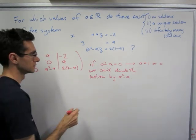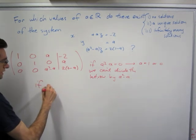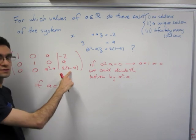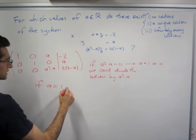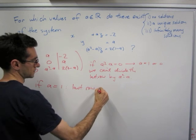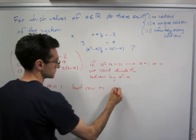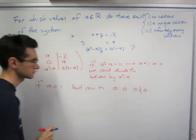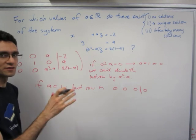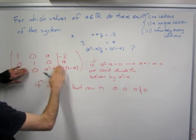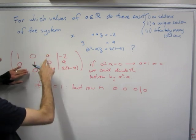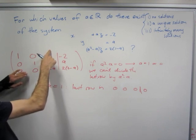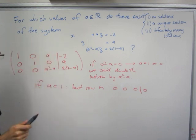So if a equals 1, then this is 0 as we saw, but this is also 0. So the last row is all 0s. 0, 0, 0, 0, 0. So we're in a case where we have a free variable, namely this row is all 0s, z is now a free variable. We have one pivot, we have a second pivot, and we have a free variable. So we have infinitely many solutions.